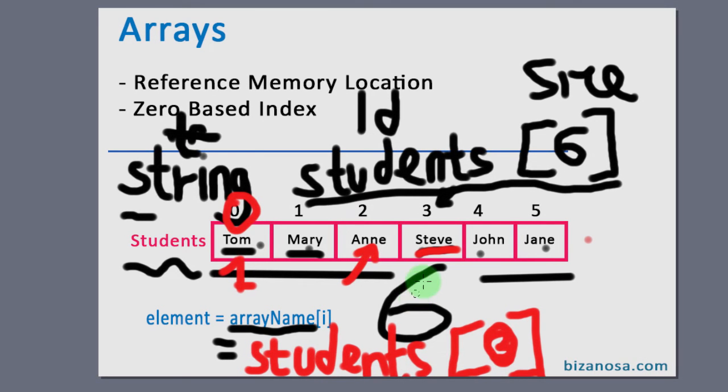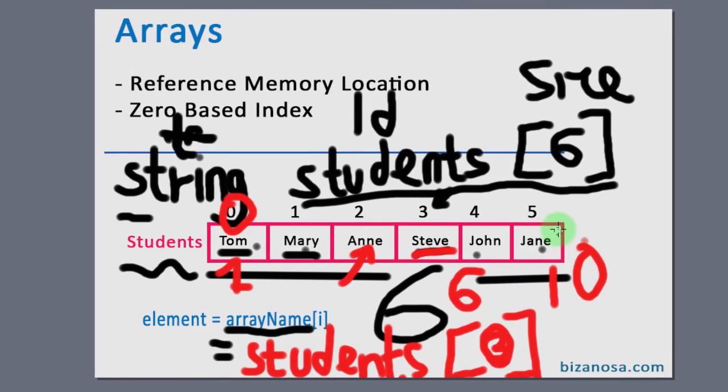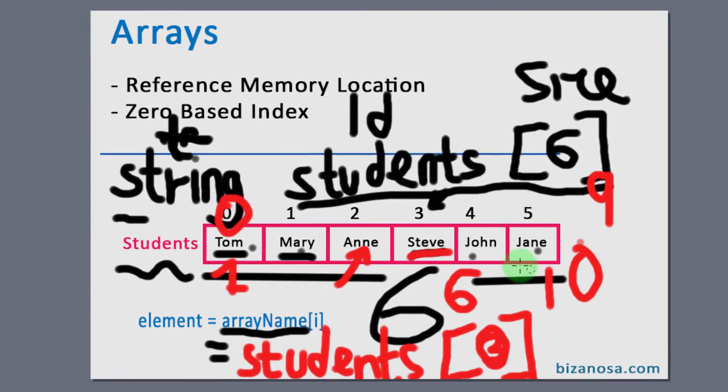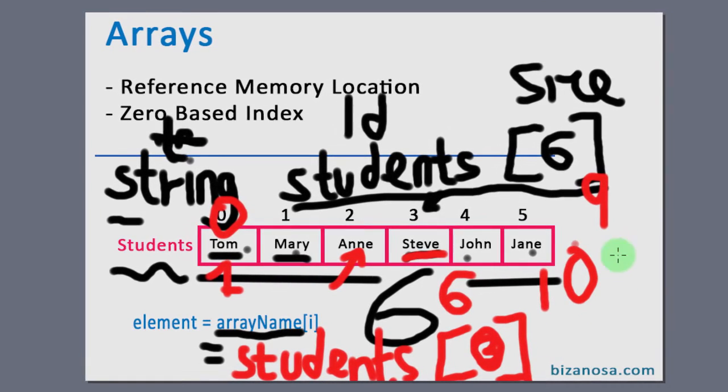so if the number of arrays is six or even ten, the last array index will be nine. If you want to access the last element in the array, it will be the length of the array minus one.